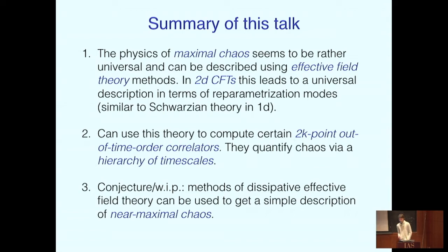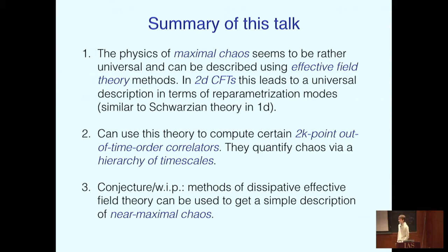The reason this is useful is that it gives you a very simple description of a process that is a priori very complicated and very fine-grained. But if you can describe it in terms of a few effective field theory degrees of freedom, that gives you powerful tools to study this physics. The second point of my talk is one particular application of this formalism: it allows you to compute higher-point out-of-time-order correlation functions in a very simple way — almost arbitrarily high-point correlation functions of some particular form.